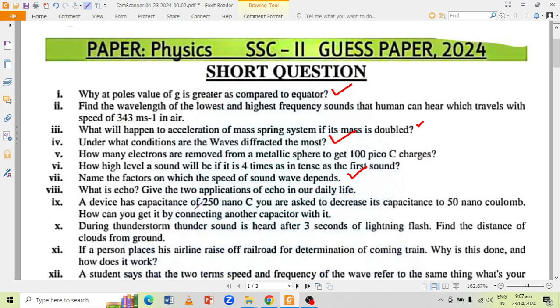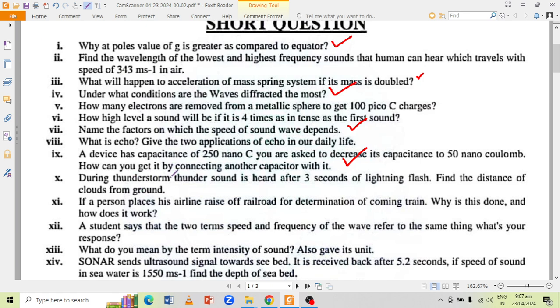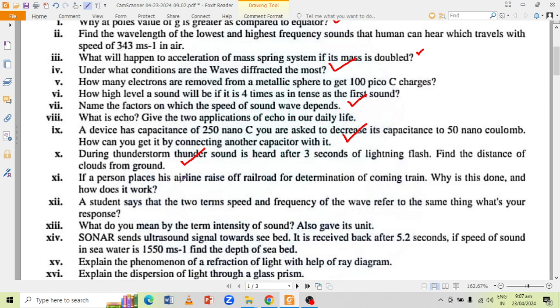A device has capacitance of 250 nanocoulombs. You are asked to decrease its capacitance to 50 nanocoulombs. How can you get it by connecting another capacitor with it? During thunderstorm, thunder sound is heard after 3 seconds of lightning flash. Find the distance of clouds from ground. If a person places his ear on railway rail for determination of coming train, why is this done and how does it work?